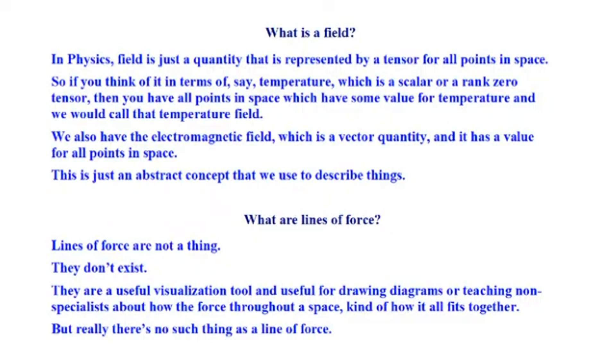We also have the electromagnetic field, which is a vector quantity, and it has a value for all points in space. What is a field? A value for all points in space. Please memorize that. All those people who think it's a physical object. No, it's not. It's a region of values, of mathematical values. It's got nothing to do with physics or with science. It's got to do with measuring and saying the value here is such and the value there is such. That's all it is.